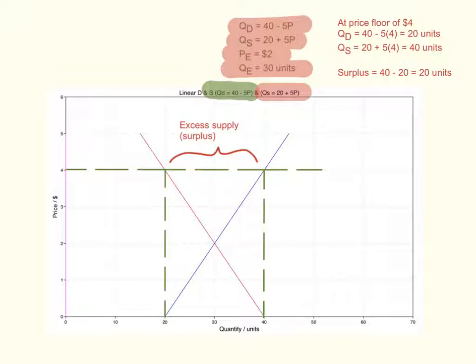Now let's assume the government has decided to impose a price floor, a minimum price of $4. All you need to do is substitute that price floor into the demand function. So Qd = 40 - 5(4) = 20 units, and Qs = 20 + 5(4) = 40 units.